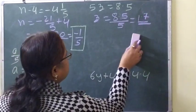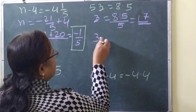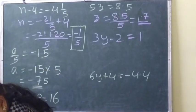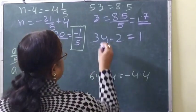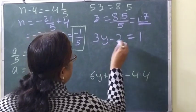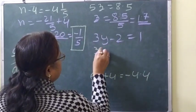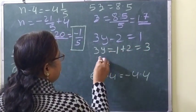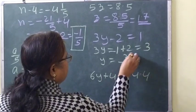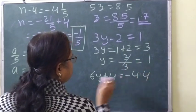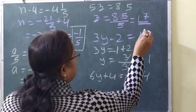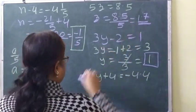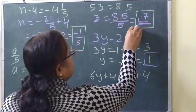For 3y minus 2 equals 1: 3y equals 1 plus 2, so 3y equals 3. Then y equals 3 by 3, which cancels to 1. So the answer is 1. And for 5z the answer was 1.7.